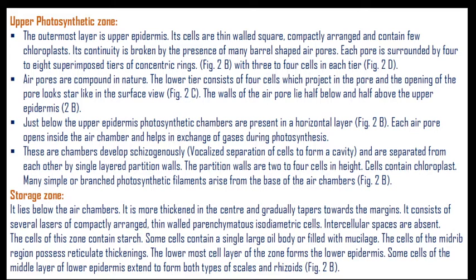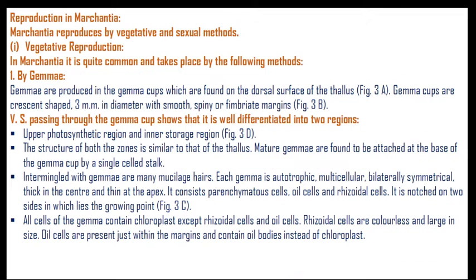Below the air chambers lies the storage zone. It is thicker in the center and gradually tapers toward the margin. It consists of several layers of compactly arranged, thin-walled, parenchymatous isodiametric cells. Intercellular spaces are absent because the cells are pentagonal to hexagonal and compactly arranged. Some cells contain oil and some are filled with mucilage. The cells of the midrib region possess reticulate thickenings. The lowermost cell layer forms the lower epidermis, from which both types of scales and rhizoids develop.